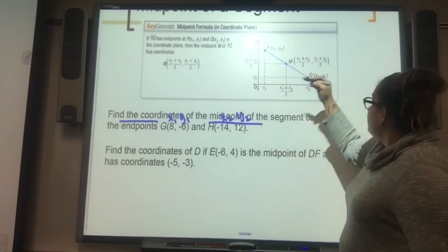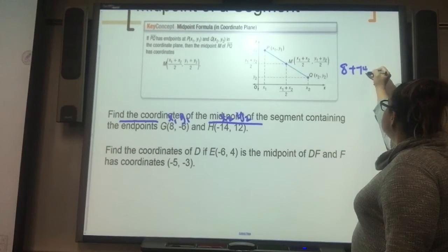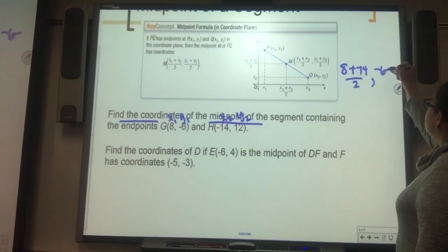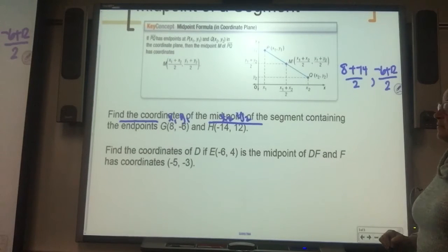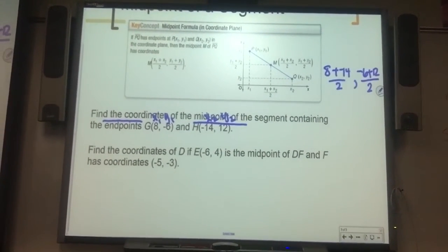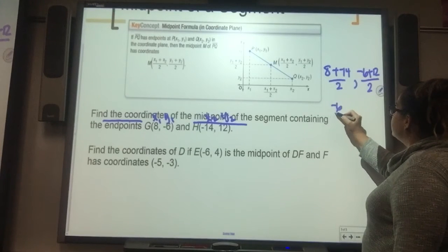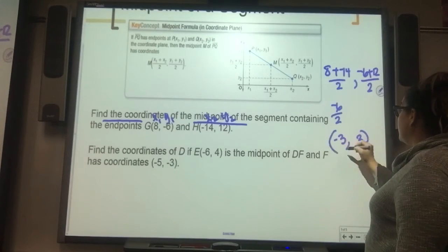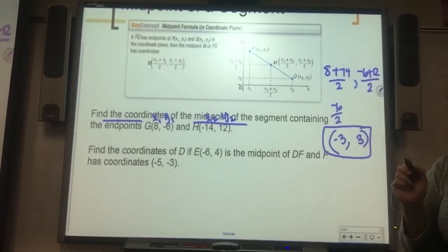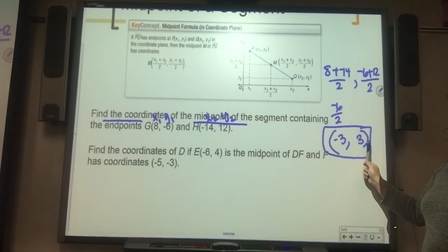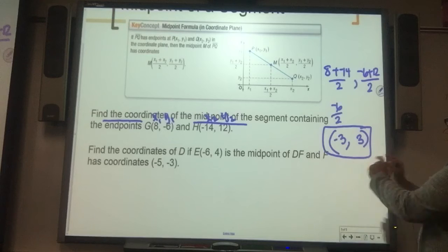So into the formula, I'm going to do 8 plus negative 14 divided by 2. That's going to give me the x value. And then negative 6 plus 12 divided by 2. And that's going to give me the y value. So 8 plus negative 14 is negative 6 halves, which is negative 3. Negative 6 plus 12 is 6 divided by 2, which is positive 3. You write your answers as an ordered pair in parentheses. We're now in 8th grade honors geometry. We should know at this point when you write an ordered pair, put parentheses around your x and your y. So I'll be looking for this in your homework.